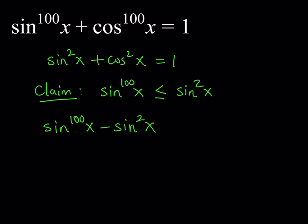Let's see what happens. Now, obviously, this can be factored. I can take out a sin²(x), and this should give me sin^98(x) - 1. Great. Now, what do we know about the sine and cosine? And whatever I say here for sine is also true for cosine, so we don't have to do this twice.